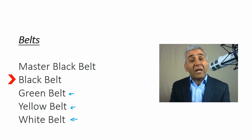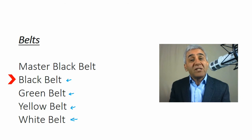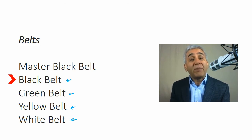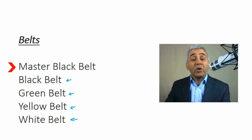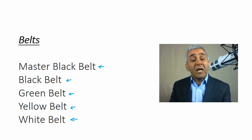After green belt, your next step would be to move to black belt. Once you achieve black belt, you would be able to do big, complex, multi-discipline improvement projects. Generally, a black belt does three to four improvement projects a year and saves a company millions of dollars every year. After completing black belt, your next step would be Master Black Belt. With this understanding, let's start the journey of learning about Six Sigma by becoming a white belt.